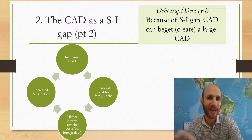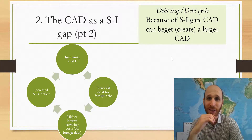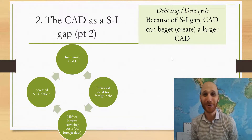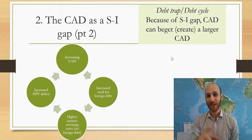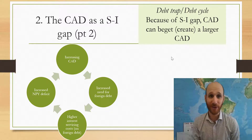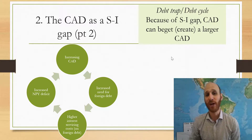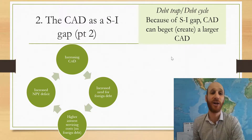We can see that with a debt trap or debt cycle, a current account deficit can beget or create a larger current account deficit. If the CAD is a result of the savings-investment gap, a larger CAD will require larger inflows, which will then increase the size of the current account deficit even further.